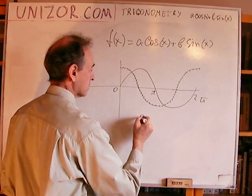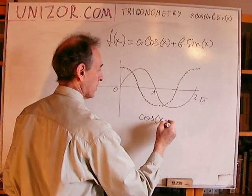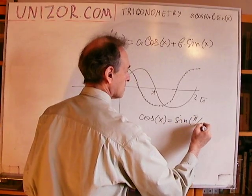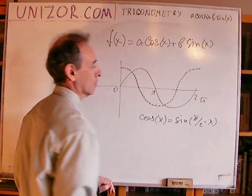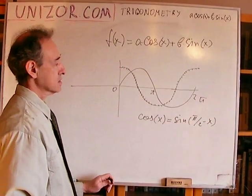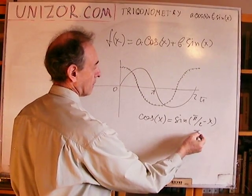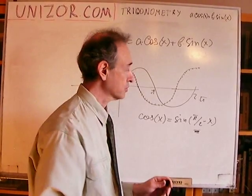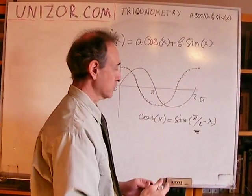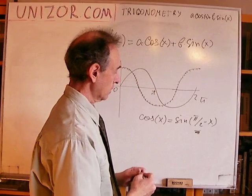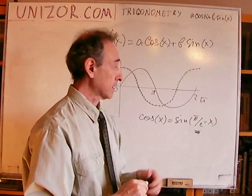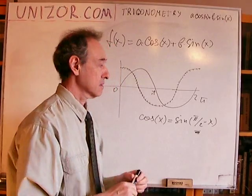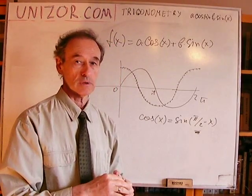You can obviously make sure that this is true by considering this identity: cos(x) = sin(π/2 - x). So, they are actually different by a horizontal shift by π/2, left or right, depending on which one you're talking about. But this one is not really so obvious that the behavior would really be repeated.